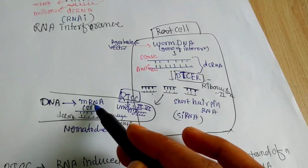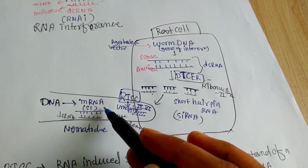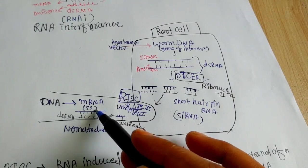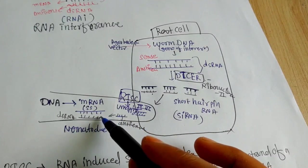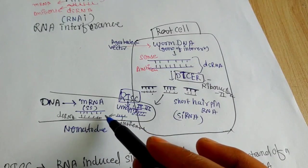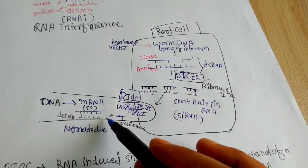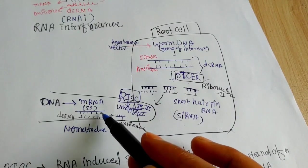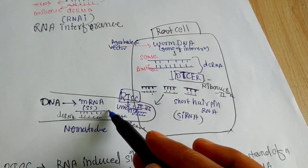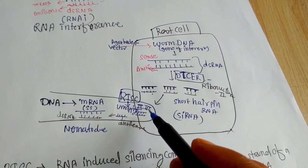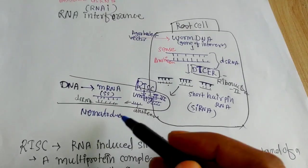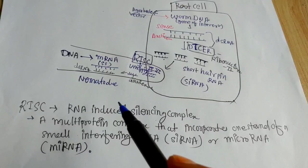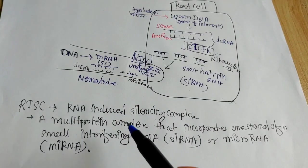And the further process of translation will be blocked because the nematode now has double-stranded mRNA. Double-stranded mRNA cannot participate in the process of translation and cannot produce proteins. So if the protein required for the growth of nematode is not produced, the nematode cannot survive in the root cell of the tobacco plant. And the tobacco plant cannot be infected by the nematode.